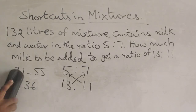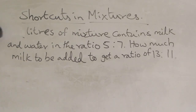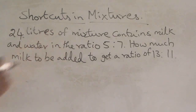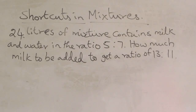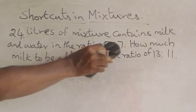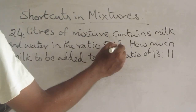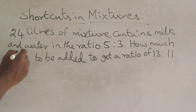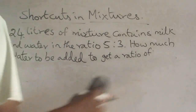Now I'm going to count the number of water. We have 24 liters. The first ratio is 5 is to 3. How much water should be added to get the ratio of 3 is to 5?